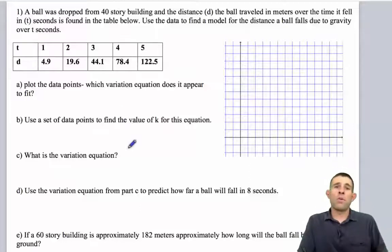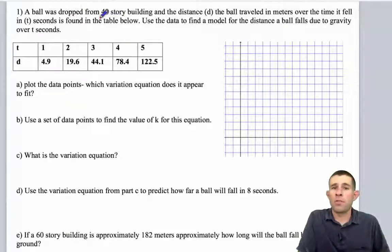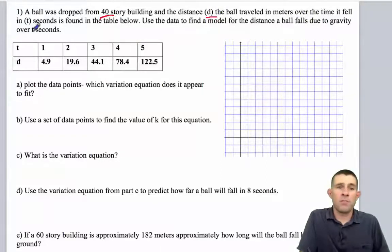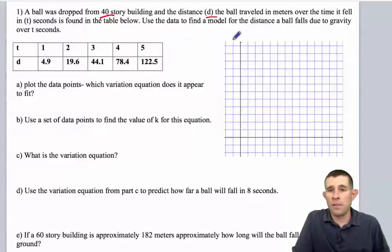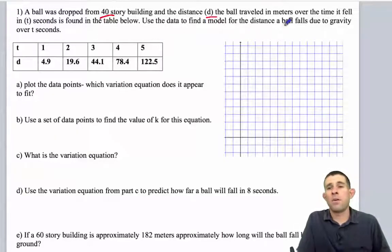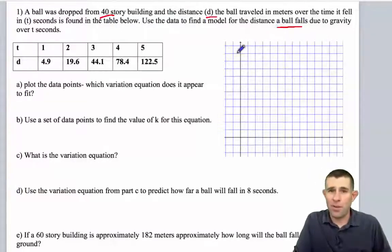Let's take a look at one more example. A ball is dropped from a 40-story building. Its distance, d, it travels in meters, over time it falls, t, in seconds, is found in this table. Use the data to find a model for the distance a ball falls due to gravity over t seconds. Pause the video and plot your points.